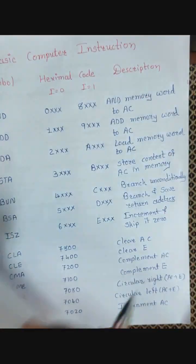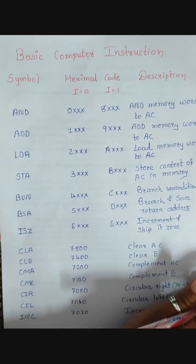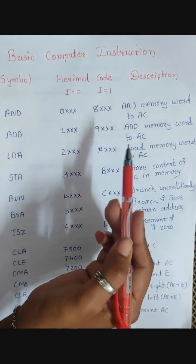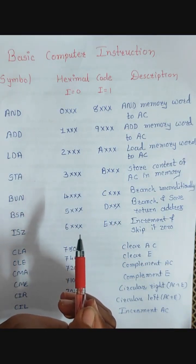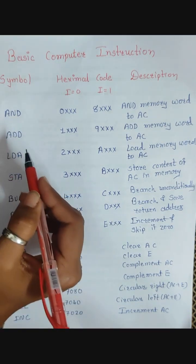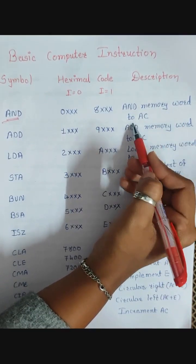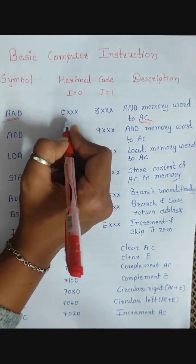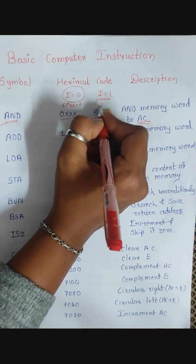Now let us see the basic instructions available in a basic computer. Here I have written the symbol, hexadecimal code, and a description of which kind of operation it performs. The first instruction is AND, which ANDs a memory word with the accumulator (AC). There are two hex codes: one for direct addressing mode (i=0) and one for indirect addressing mode. The opcode for AND is 000, and the 12 bits marked XXX represent the address.